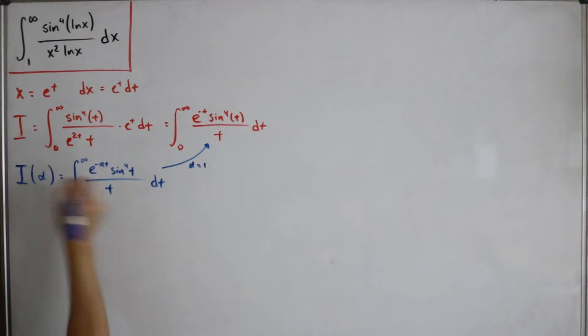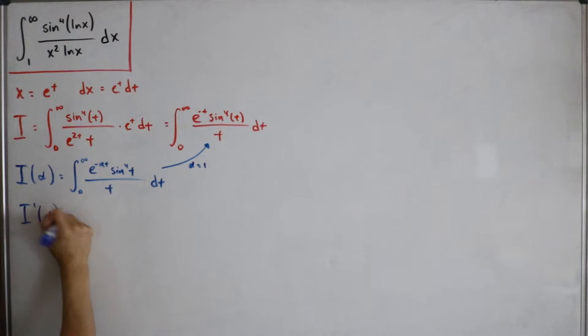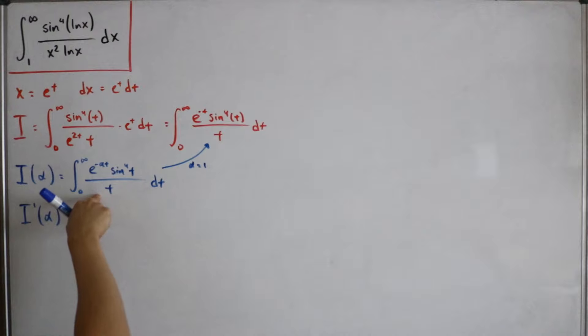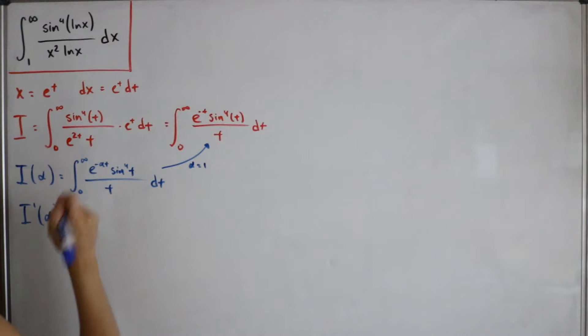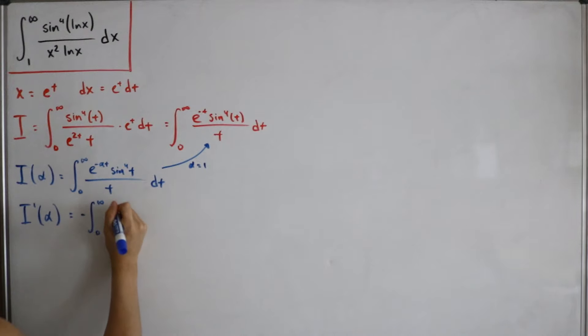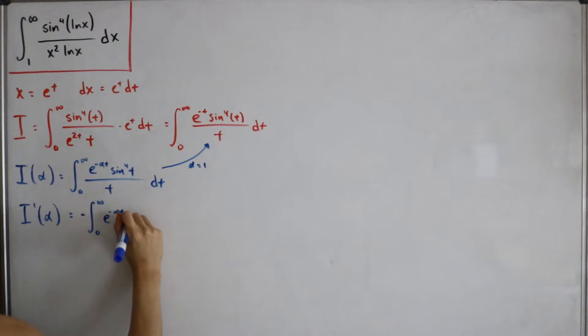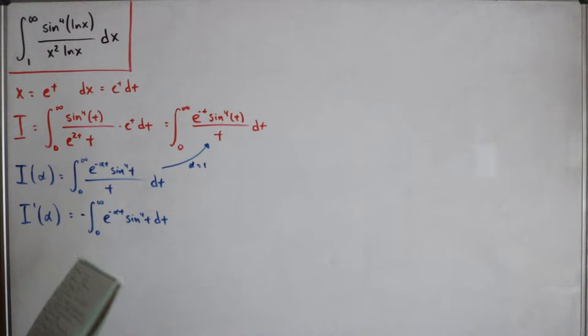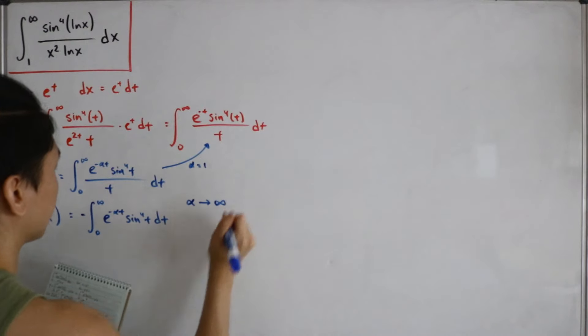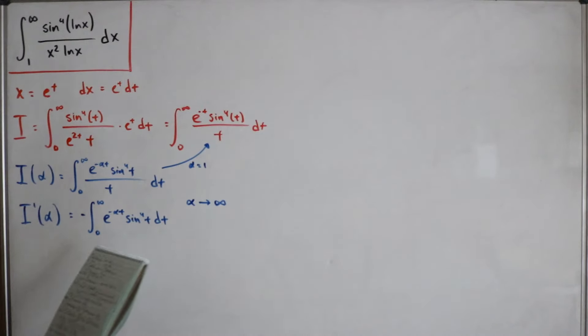Taking the derivative with respect to α on both sides, I'(α) = −∫₀^∞ e^(-αt) · sin⁴(t) dt. We also note that as α → ∞, I(α) → 0, which we'll use later to determine the constant of integration.